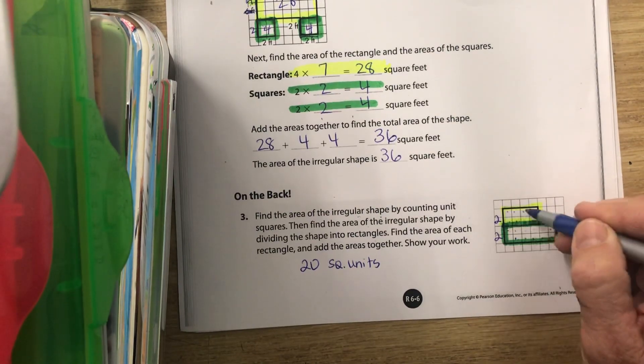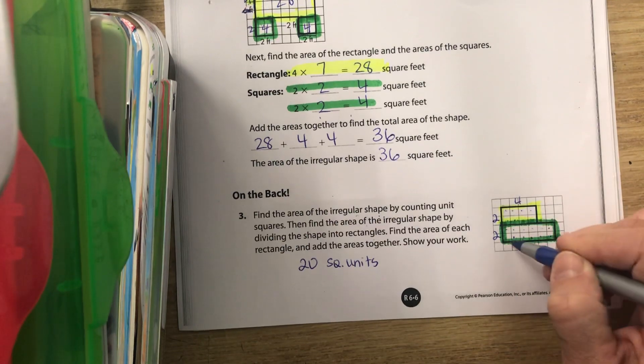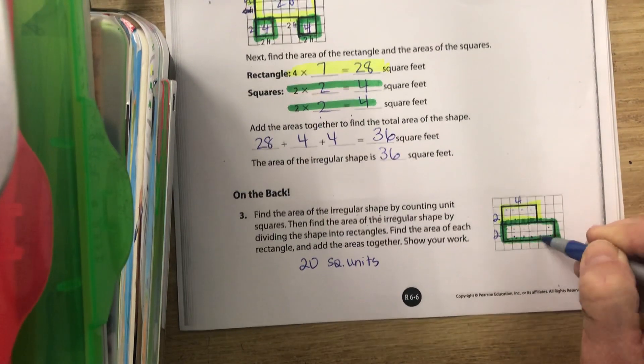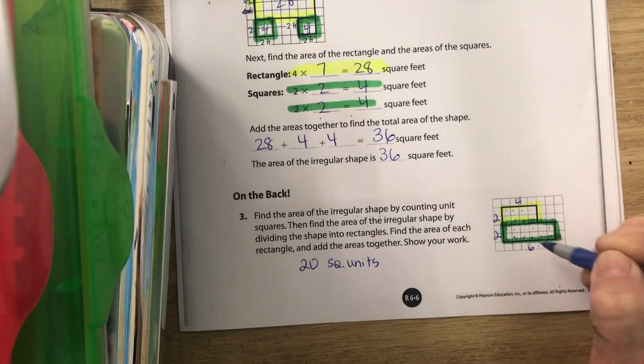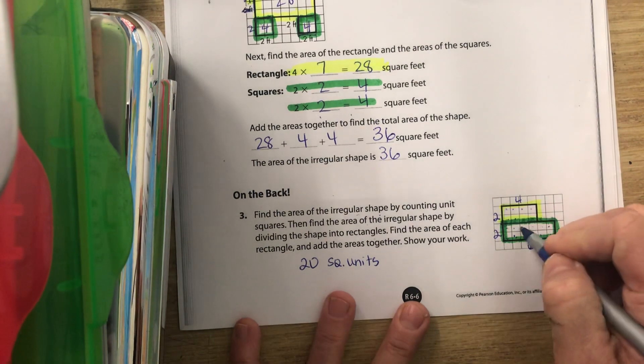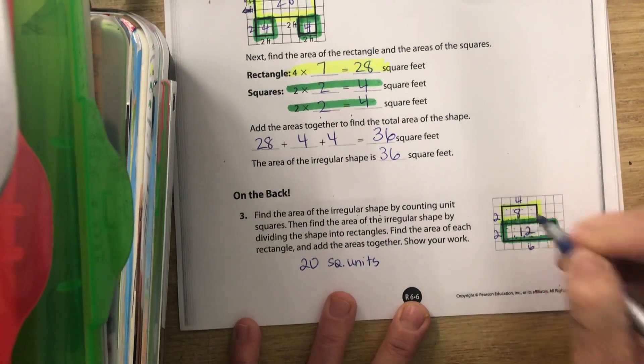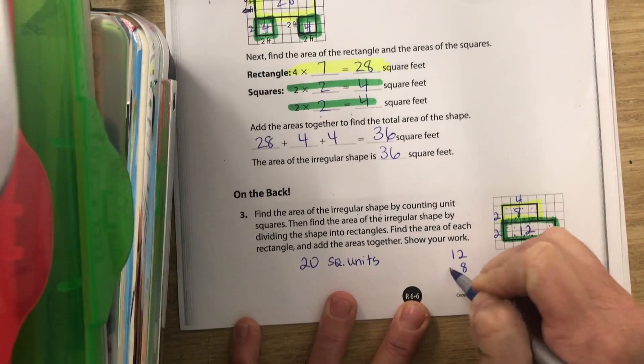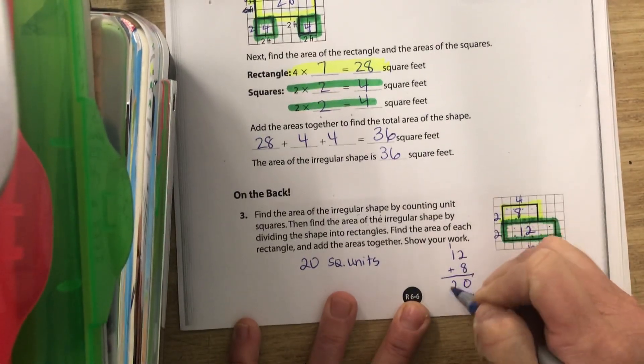Down here: one, two, three, four, five, six—this is six. So see if you can calculate the area inside of each one of those rectangles. Okay, good. You should have 12 and eight, and 12 plus eight equals 20.